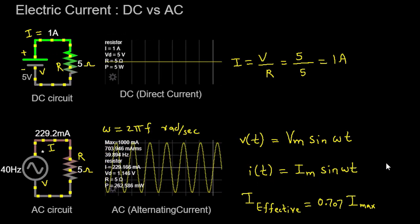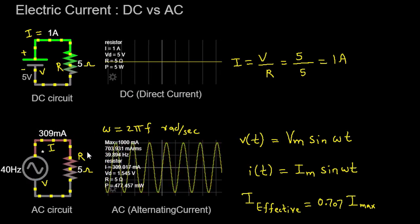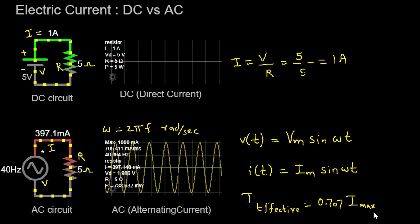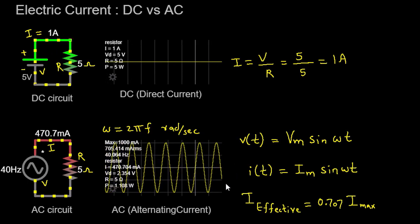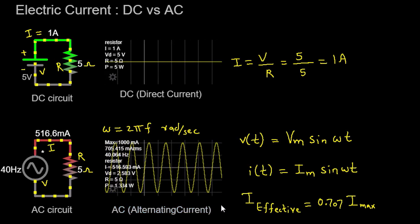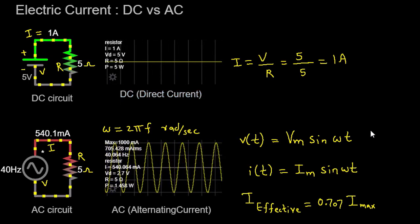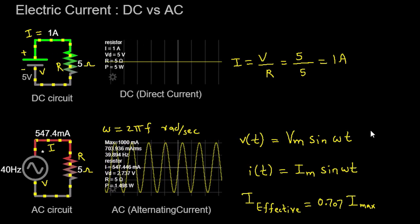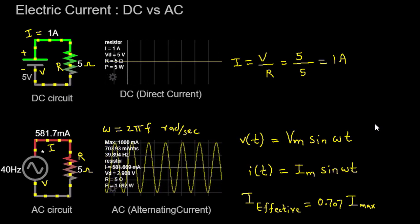To summarize: in a DC circuit, the current flows in one constant direction, while in an AC circuit, it alternates its direction periodically. In a DC circuit, we apply Ohm's law to determine the current based on voltage and resistance. In an AC circuit, we consider the angular frequency and employ equations involving sine functions. It's important to note that AC power transmission is more commonly used for long-distance transmission because AC can be easily transformed to higher or lower voltages using transformers, whereas DC power transmission encounters more significant challenges in this regard.